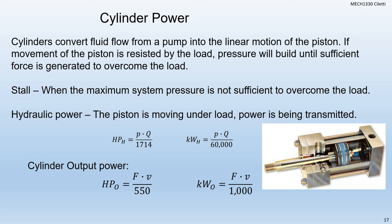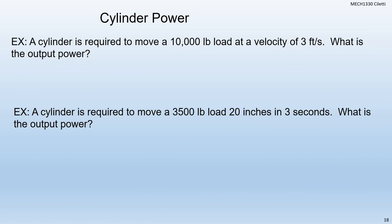We have to be able to calculate the hydraulic power necessary to not just hold the load but actually move the load — the piston's moving under load and we're transmitting power. The two equations for power: hydraulic horsepower is P times Q divided by 1,714 in imperial. If we're talking metric, it's KW hydraulic equals P times Q divided by 60,000. Then we have cylinder output power: HP out equals force times velocity divided by 550, and kilowatt output equals force times velocity divided by 1,000.